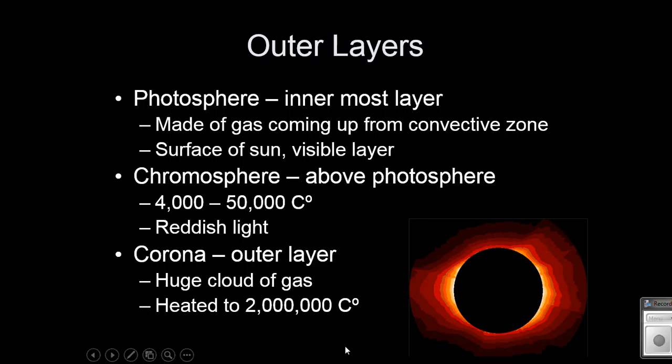Once we get to our outer layers, now we have the parts that we can see. So the photosphere is the deepest part of the sun that we can actually see. The gases come up from the convective zone, and that's where they start to shine. And that's the deepest part that we can see. It looks kind of grainy if you look at it through a special filtered telescope. Please don't look at the sun.